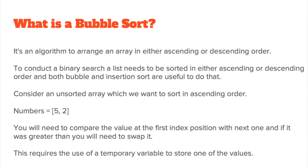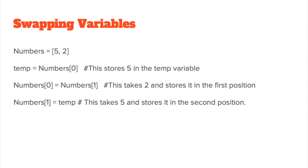This requires the use of a temporary variable to store one of the values. You could take five out and store it in the temp variable, compare it to the next one, and then do a swap. So: numbers is equal to [5, 2]. We store numbers[0] — which is five — into temp. Then numbers[0] becomes numbers[1], so two comes into index zero. Then numbers[1] gets the value stored in temp, so five moves into the second position. This is the essence of swapping — you need a temporary space to move a value, and then after a comparison you rewrite things.